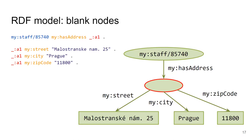An important property of blank nodes is that their local IDs will change when data is loaded into an application and saved again, since those IDs are local to the document. If that is undesirable, you should use an IRI rather than a blank node.